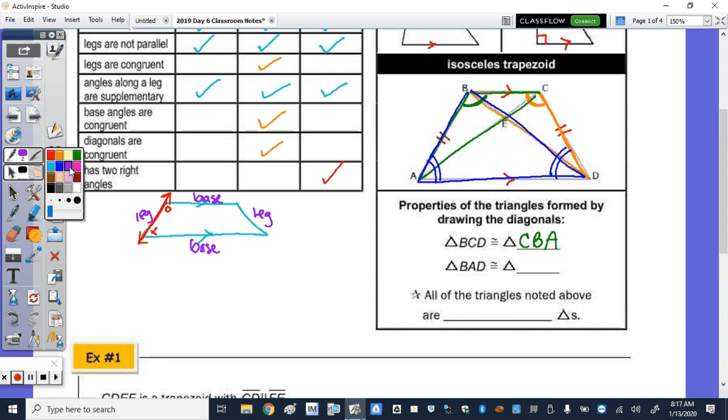BA is congruent to CD, and they overlap at AD. So BCD is congruent to triangle CDA. And all the triangles noted above are scalene triangles.